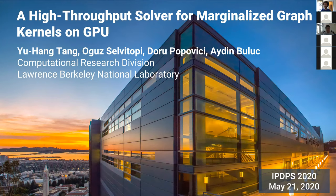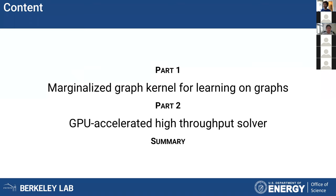Today I'm going to be talking about our work on a GPU accelerated high throughput solver for the marginalized graph kernel. This talk will be divided into two parts. In the first part, we'll give a background introduction on what is a marginalized graph kernel and why it is useful for machine learning of graphs. In the second part, we're going to introduce what we did to accelerate the computation of the solver on the GPUs.